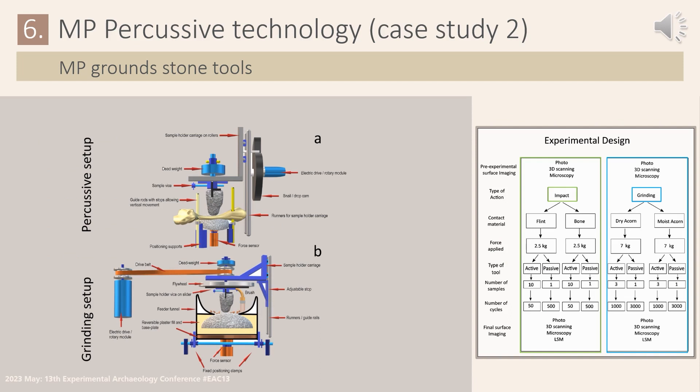To further explore these questions and assess the functionality of these tools, a highly controlled mechanical experiment was designed. Based on the data collected from the artifacts, similar raw materials were used to conduct percussive, bone and flint knapping, and grinding experiments using one of our rotary experimental setups. On the right you can see a diagram illustrating the organization and design of the sequential experiment. Similar to case study 1, several variables were controlled and measured, including the applied force and the number of cycles.